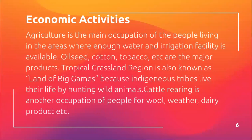Economic activities. Agriculture is the main occupation of people living in areas where enough water and irrigation facility is available. Oil seed, cotton, tobacco, etc. are the major products. Tropical grassland region is also known as land of big games because indigenous tribes live their lives by hunting wild animals.